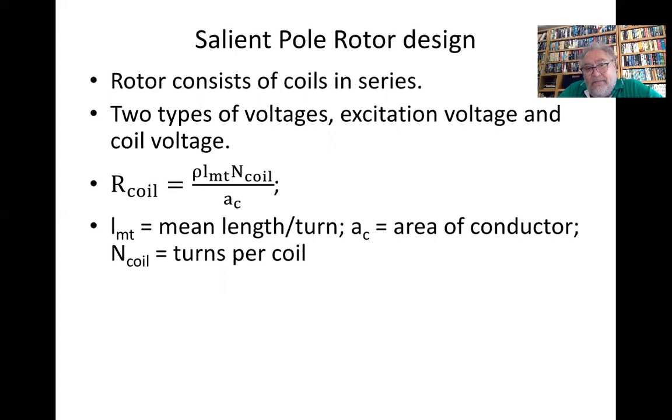l_mt is the mean length per turn, A_c is the area of the conductor, and n is the turns per coil. The MMF of the coil is n_coil times I_field. R_coil is V_coil divided by I_f.